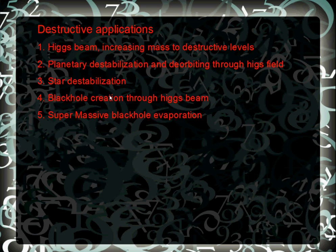Number three: stellar destabilization through a Higgs shield. Making the gravity less would cause the pressure to literally push all the material from a star outward — an explosion, compared to the Higgs beam which would cause an implosion — resulting in a nova or supernova depending on the size of the star. Number four: the creation of a black hole through the Higgs beam.